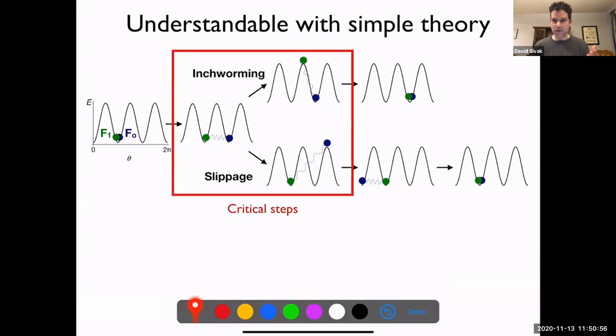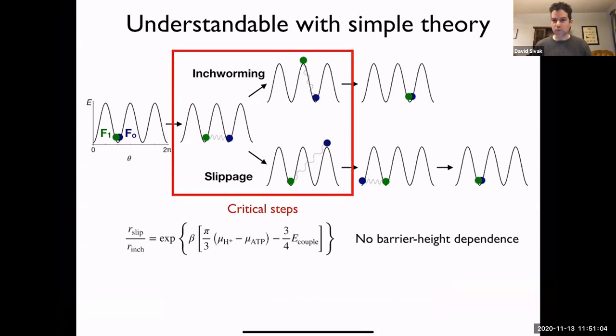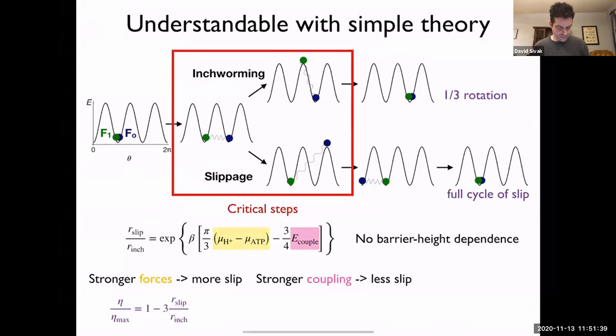So the rates of these critical steps are what are going to determine whether you have transduction or slippage. You can take the ratio of these rates, just a simple Arrhenius picture of exponential dependence of the rate on the energy difference between the barrier and the metastable state. The main things I want you to take away from this equation are that there's no dependence on the barrier height, because essentially it affects each of these competing rates similarly. As you make the driving forces stronger, you promote more slip. As you make the coupling strength stronger, you reduce the slip, because the systems are more tightly coupled together and are going to translocate together.